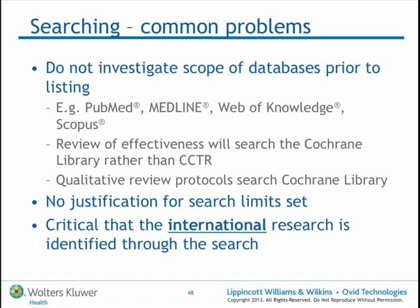This is one I see often: a review of effectiveness that will search the Cochrane Library. The Cochrane Library has five or six different databases within it — the Database of Systematic Reviews, the Database of Abstracts of Reviews and Effects, the Health Technology Assessment Database, the NHS Economic Evaluation Database, and the Methodological Reviews Database. But the really important one for a review of effectiveness is Cochrane Central's Trial Register. And for qualitative reviews, the Cochrane Collaboration doesn't conduct qualitative reviews — so why would you search there?